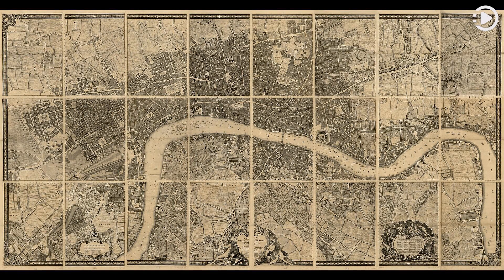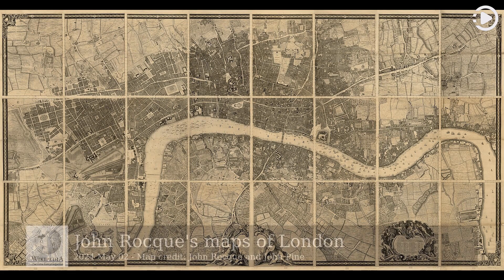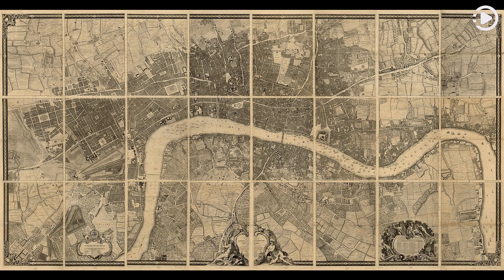Hello! Wikipedia's Picture of the Day, May 2, 2024. Today's video is about John Rocque's maps of London. John Rocque's maps of London were published in 1746. A French-born British surveyor and cartographer, John Rocque produced two maps of London and the surrounding area.